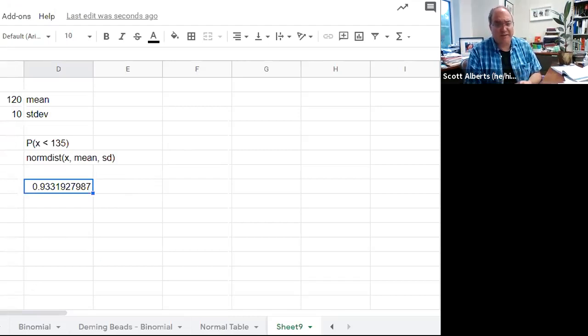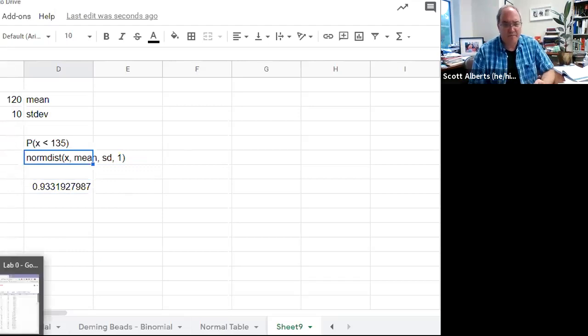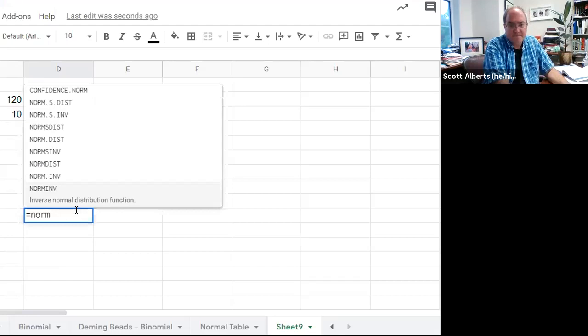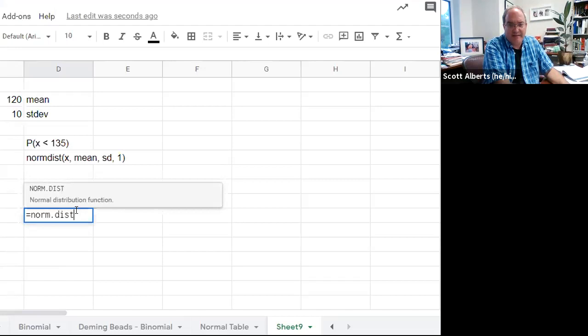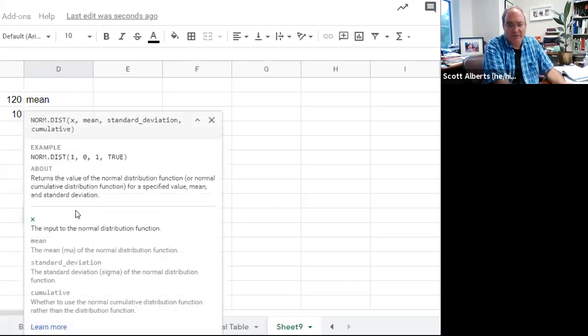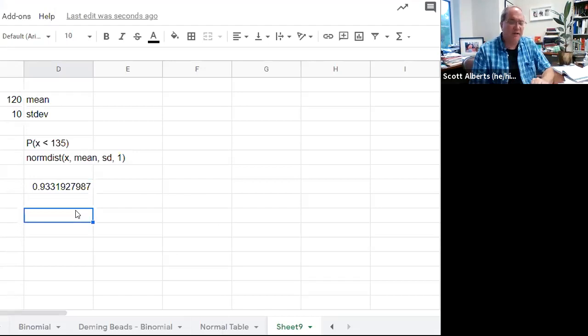Norm.dist is the command. It takes a little bit of getting used to, but it's actually pretty straightforward to use. Sometimes it wants you to put in a cumulative thing, and if you do that, just make that a one. There's also norm dot dist, which does the same thing. That's a little bit different version. Either norm.dist or norm dot dist. You put in x mean standard deviation and it calculates it for you.